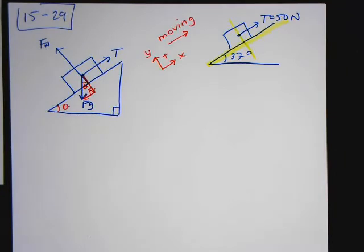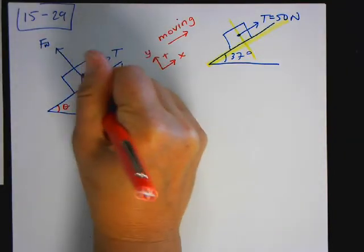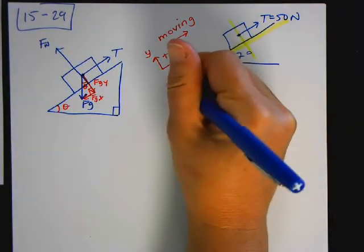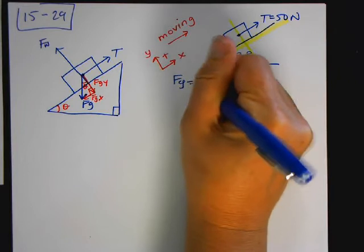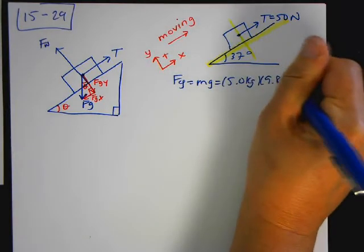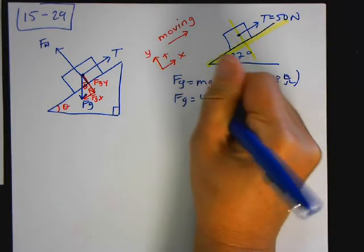Okay. So this one is going to be FGY. This is going to be FGX. So I'll just go ahead. I'll draw it to the side. First I'll do F of G is equal to MG. So it's 5 kilograms times 9.8 meters per second squared. So F of G is equal to 49 newtons.